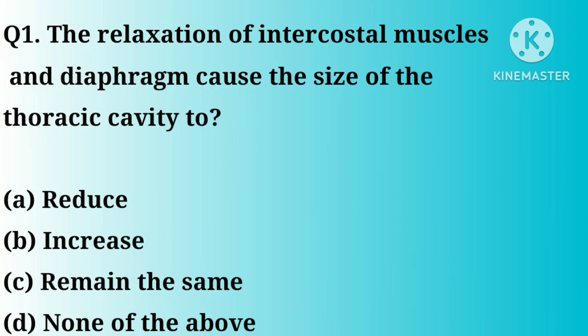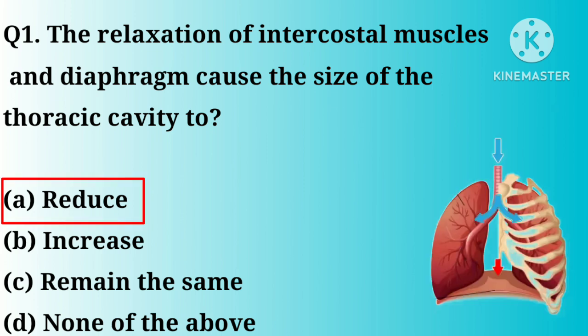Q1. The relaxation of intercostal muscles and diaphragm cause the size of the thoracic cavity to: A. Reduce. B. Increase. C. Remain the same. D. None of the above. Correct answer: A.